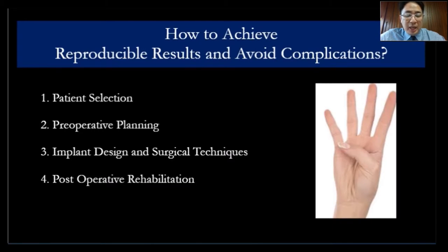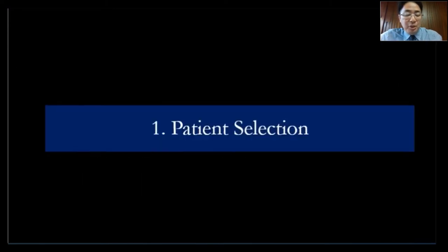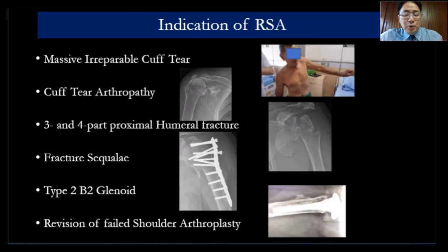Number three is very important, and number four is post-operative rehabilitation. For patient selection, you need to stick to the indications. The indications for reverse shoulder arthroplasty are extending more and more.